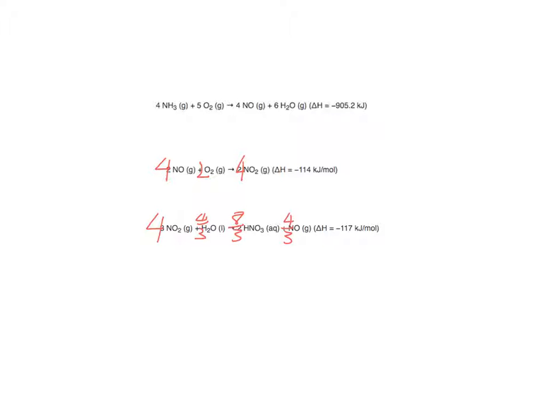Now if we wanted to combine these equations and write it in a more simplified version as one overall equation, we just cancel out reactants with products. For example, the four NOs on the left cancel with four NOs on the right, and so on.